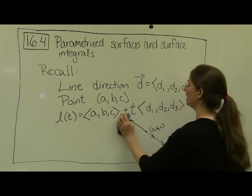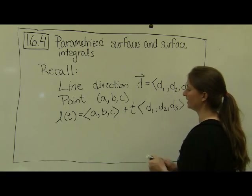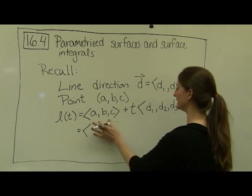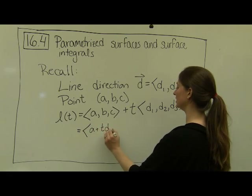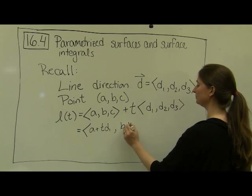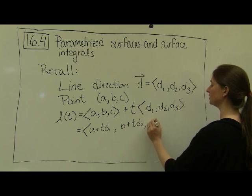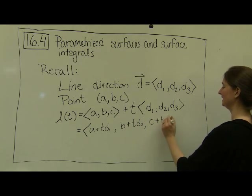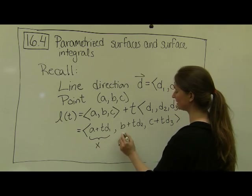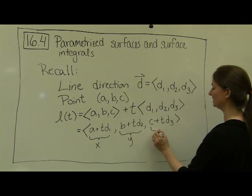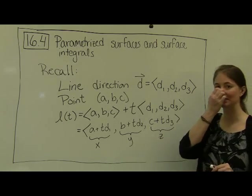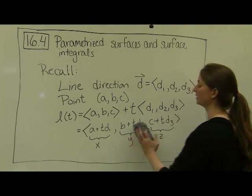We can distribute this through and express each component separately: the first component is a + t·d1, the second component is b + t·d2, and the third component is c + t·d3 — giving equations for the x, y, and z components respectively. I want to point this out because it is exactly analogous to what happens when we talk about parametrizing surfaces.